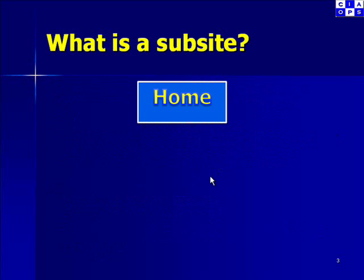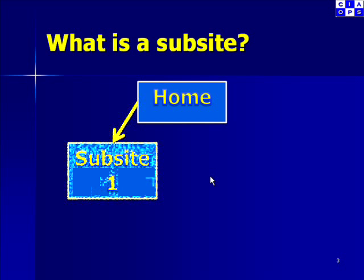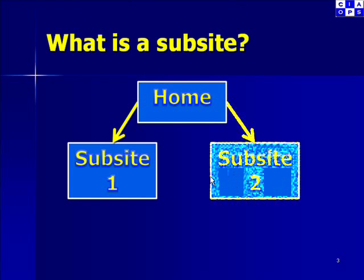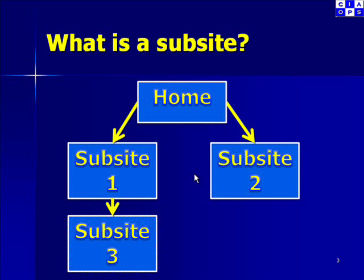When we start SharePoint initially we have a home site into which we put all that information. When we create a subsite we create a new SharePoint site which is below the existing home site. We can then create a further subsite below the home site but on the same level as the original subsite. And if we continue on we can actually create subsites below subsites as you can see from the diagram here.